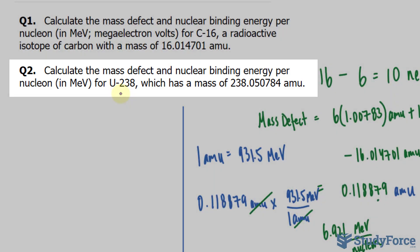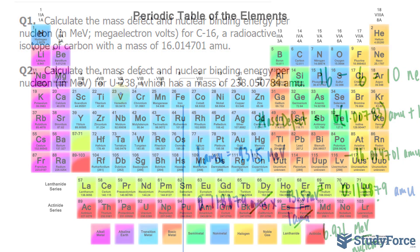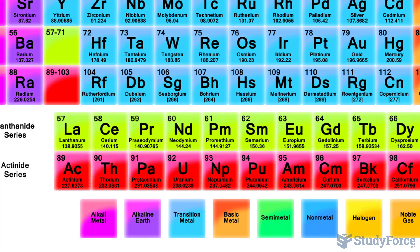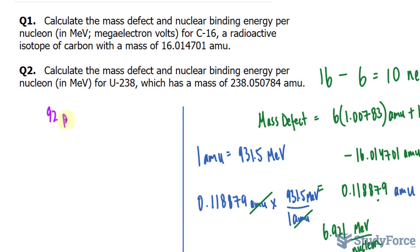So using the same procedure as before, the very first thing that I want to do is look up how many protons are in one uranium atom. As you can see from the periodic table, it has 92 protons. So let me write that down. 92 protons.